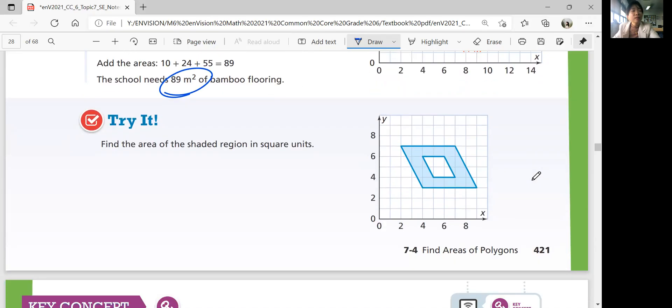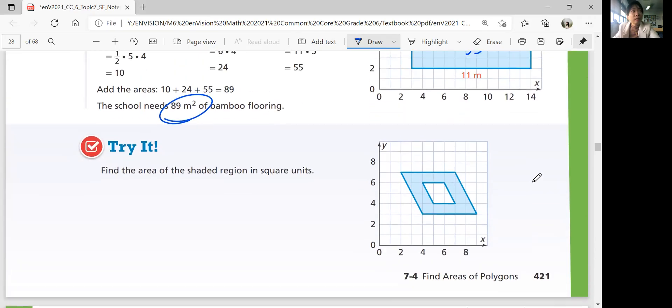Let's see if you can do this try question by yourself. Find the area of the shaded region in square units and come back when you're ready for answers. Did you figure it out? What is the one way you can do? You can figure out the whole area and then subtract the area of this one. How do you figure this out? It's a parallelogram, right? So you multiply base times height.